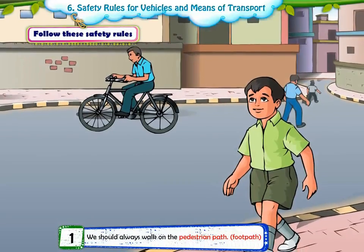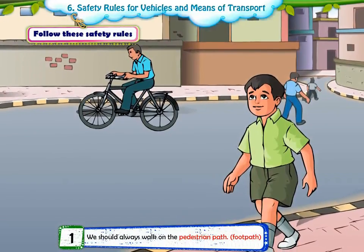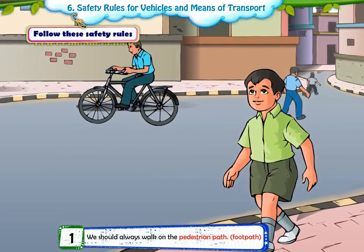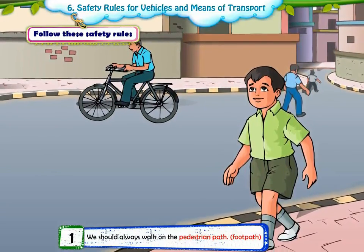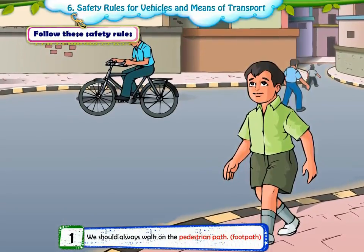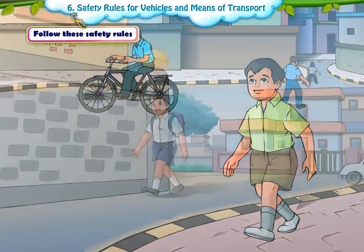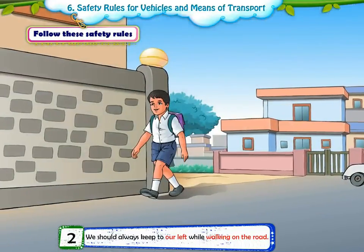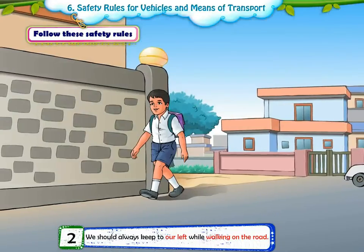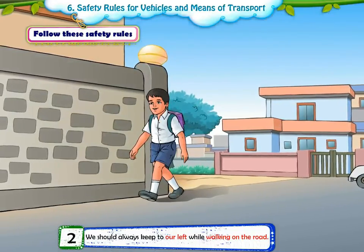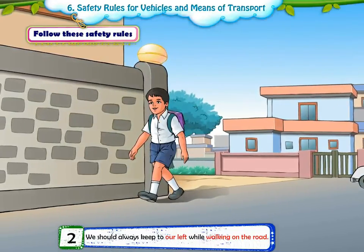1. We should always walk on the pedestrian path, also known as the footpath. 2. We should always keep to our left while walking on the road.